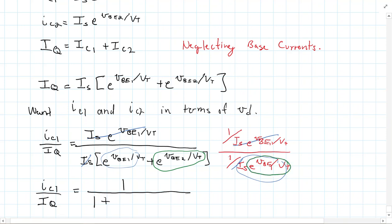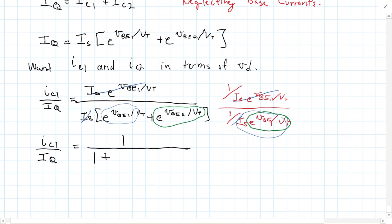So what I'm going to wind up with here is 1 plus E to the VBE2 minus VBE1 divided by VT.